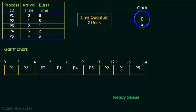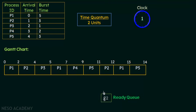At time 1, P1 is still executing — it has not yet completed the time quantum of 2 units. Looking at the table, we see that P2 has arrived at time 1. Since P1 is currently using the CPU and has not completed its time quantum, P2 is placed in the ready queue.